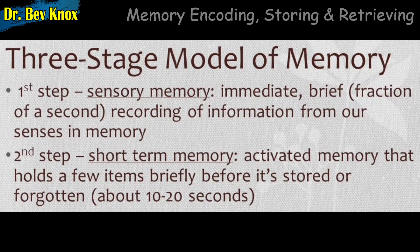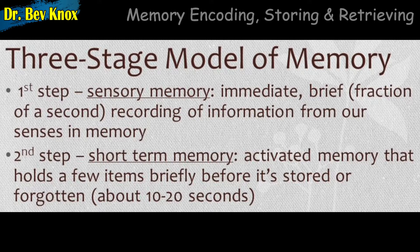Because the information stored briefly in sensory memory consists of representations of raw sensory stimuli, it is not meaningful to us. If we are to make sense of it and possibly retain it, the information must be transferred to the next stage of memory: short-term memory. Short-term memory is the memory store in which information first has meaning, although the maximum length of retention is relatively short. The specific process by which sensory memories are transformed into short-term memories is not entirely clear. Some theories suggest that the information is first translated into graphical representations or images, and others hypothesize that the transfer occurs when the sensory stimuli are changed into words.